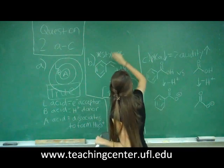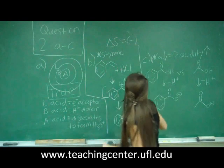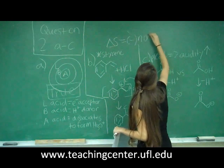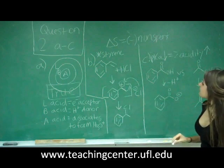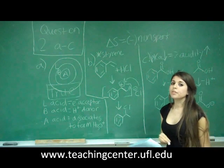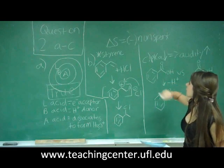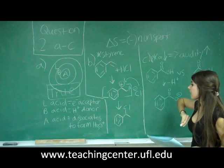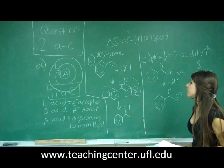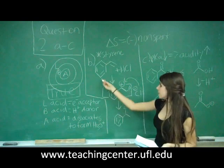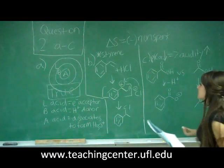So delta S is equal to negative, therefore it's non-spontaneous. So remember, this is kind of going back to Gen Chem as well. With a non-spontaneous reaction, you're going to be starting off with more moles of reactant than product. So here, styrene is a star molecule, so you're kind of expected to know that.